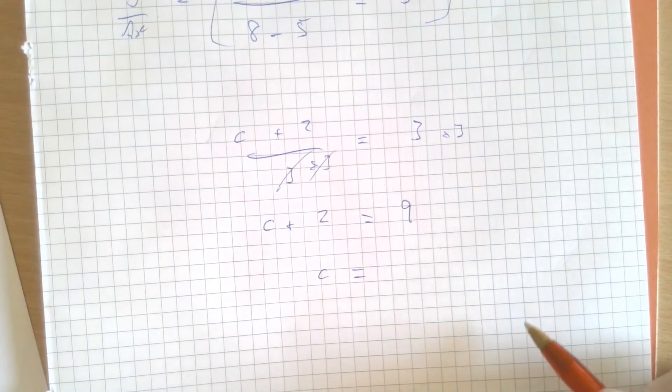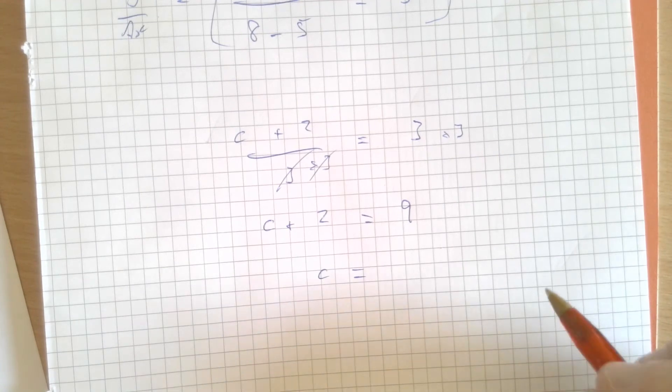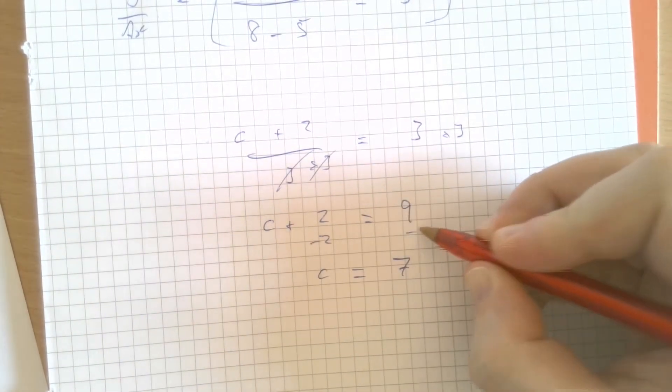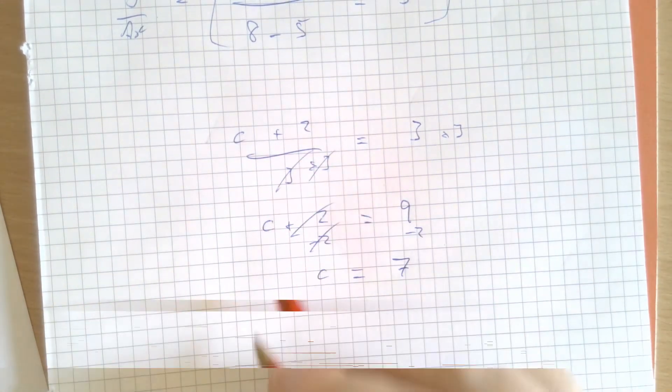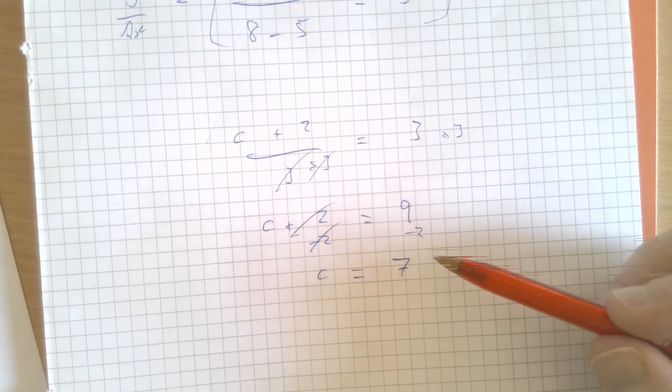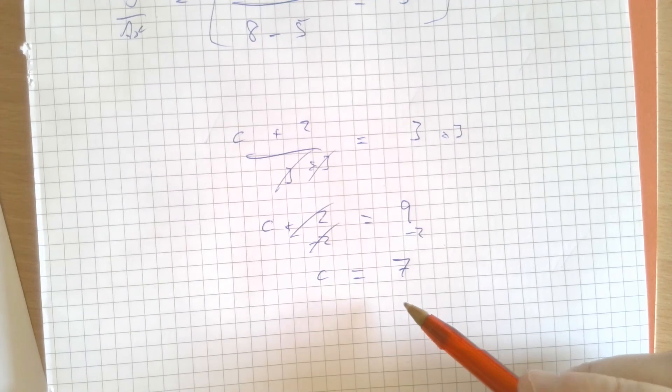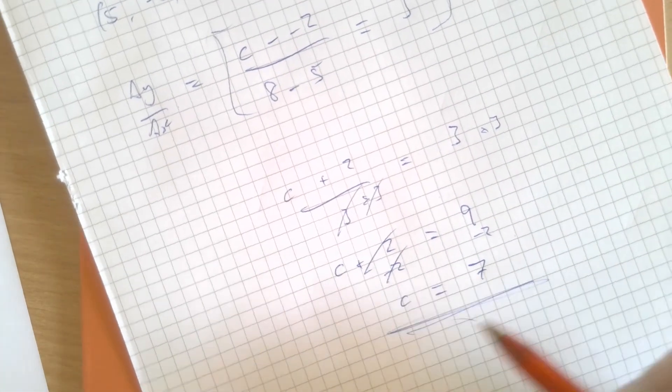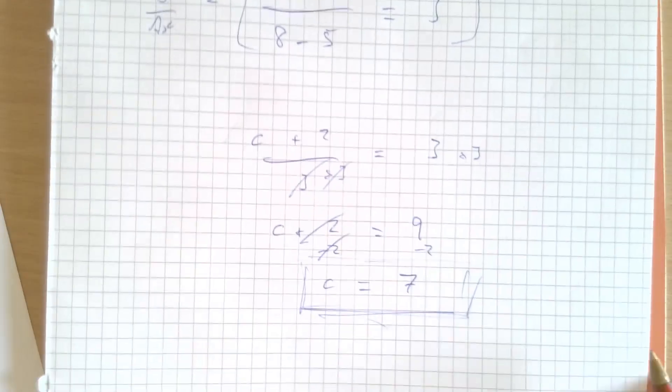So c has got to equal, well, you can probably do this for me, can't you? 7 by taking away 2 from both sides, leaving c on its own. And my 9 minus 2 is 7. That's the value of c, and therefore, the answer to question 3.